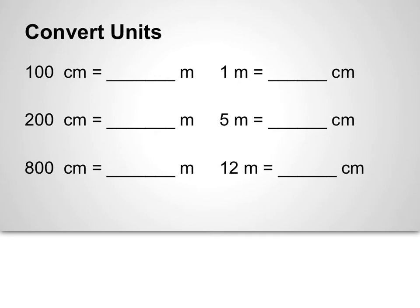Let's start by reviewing how to convert units. If I have 100 centimeters, I know that that is equal to 1 meter. If we looked at a meter stick, we would be able to see that on 1 meter there are 100 centimeters. So that means if I have 200 centimeters, I have 2 meters. Another example is if I had 800 centimeters, I would have 8 meters.